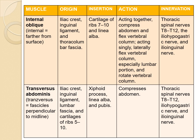The next muscle is transverse abdominis. Transverse indicates the fascicles are perpendicular to the midline. Origin: iliac crest, inguinal ligament, lumbar fascia and cartilage of ribs 5 to 10. Insertion: xiphoid process, linea alba and pubis. The main action of transverse abdominis is to compress the abdomen. Innervation: thoracic spinal nerves T8 to T12, iliohypogastric nerve and ilioinguinal nerve.